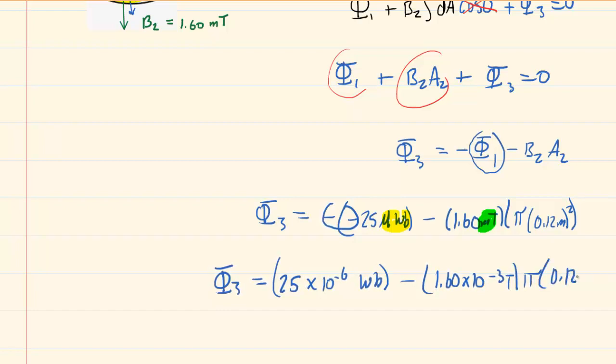So once you make those conversions, you can punch this into your calculators. And you're going to end up with a value of negative 4.74 times 10 to the minus 5. This will come out in webers.